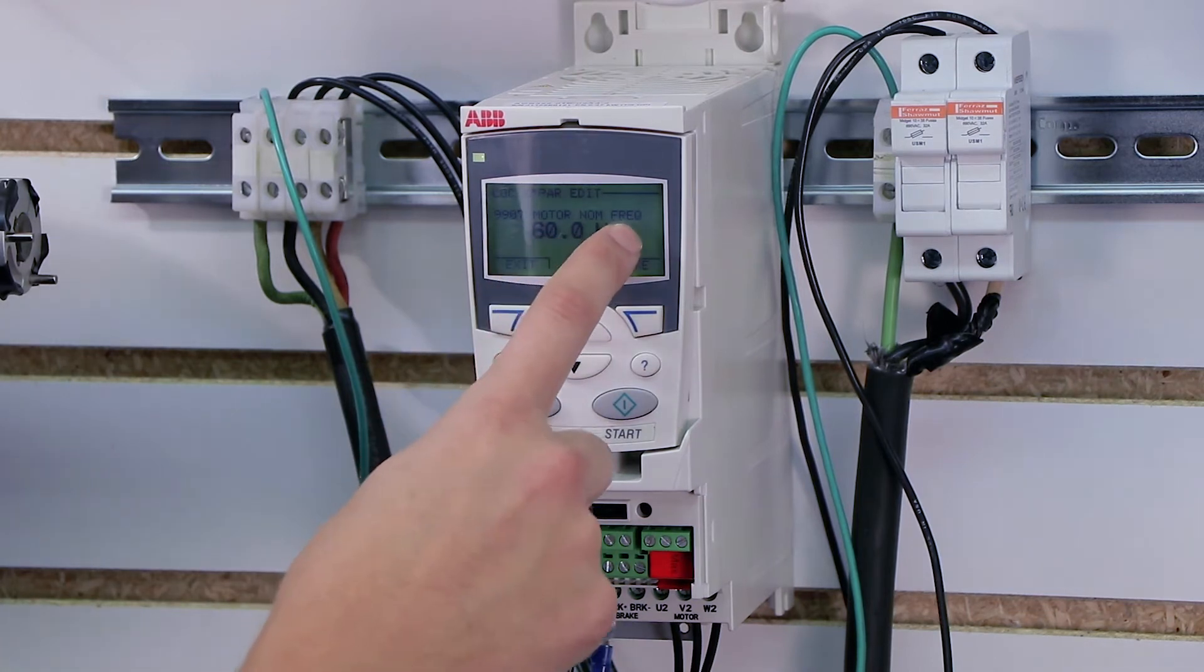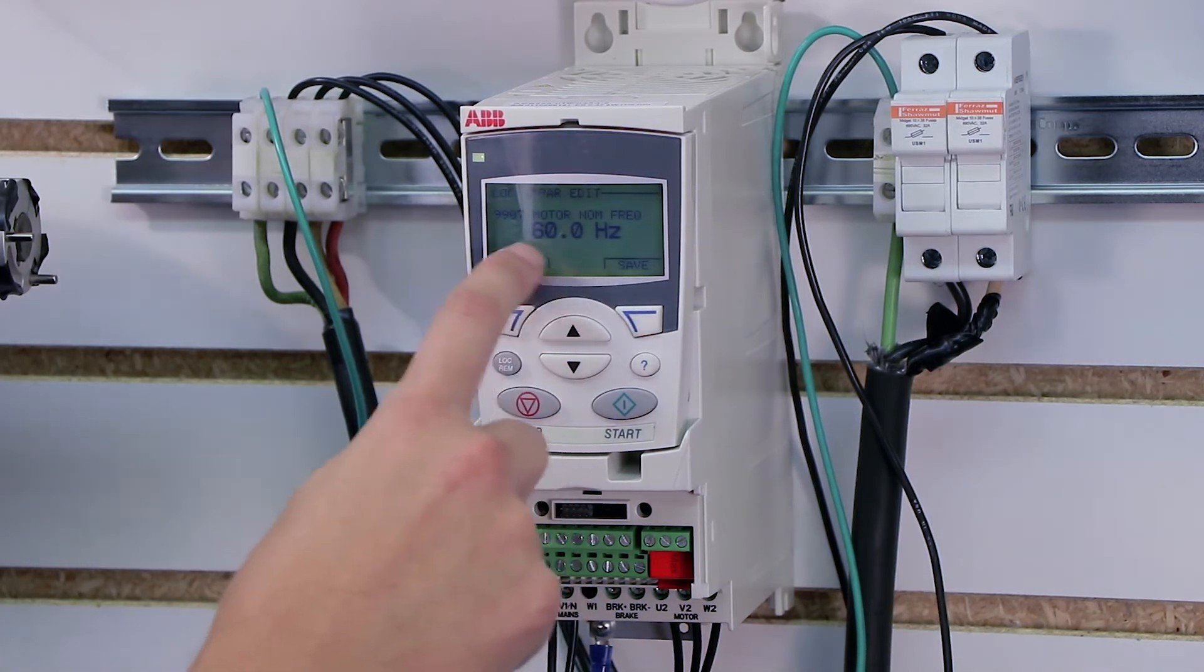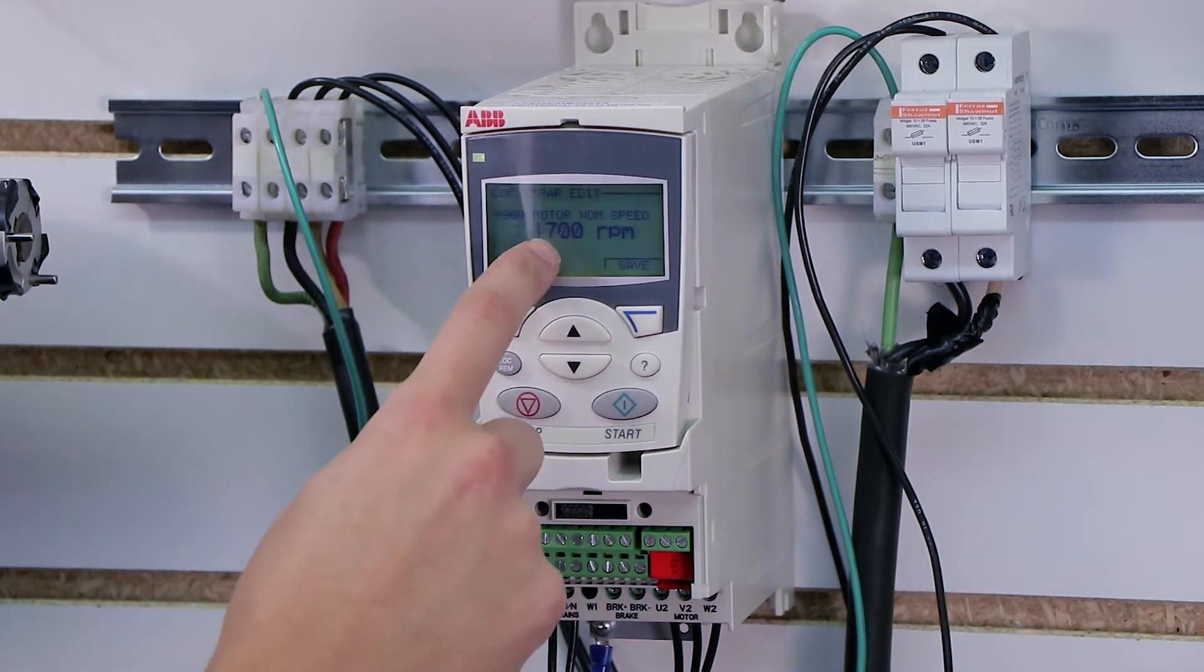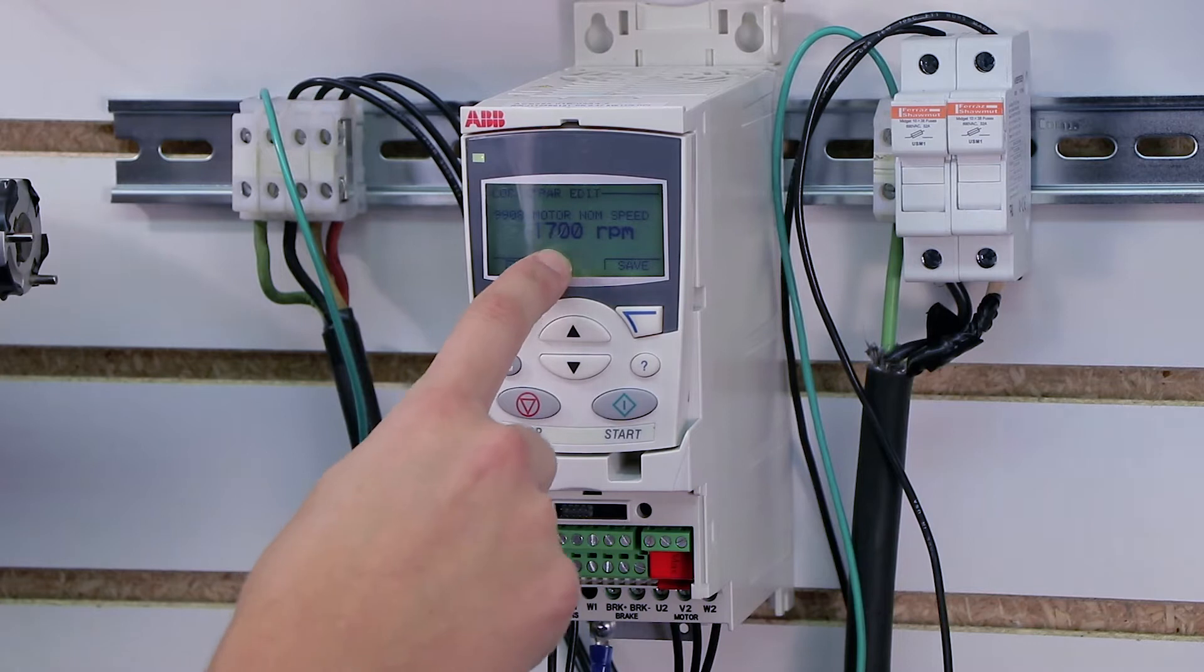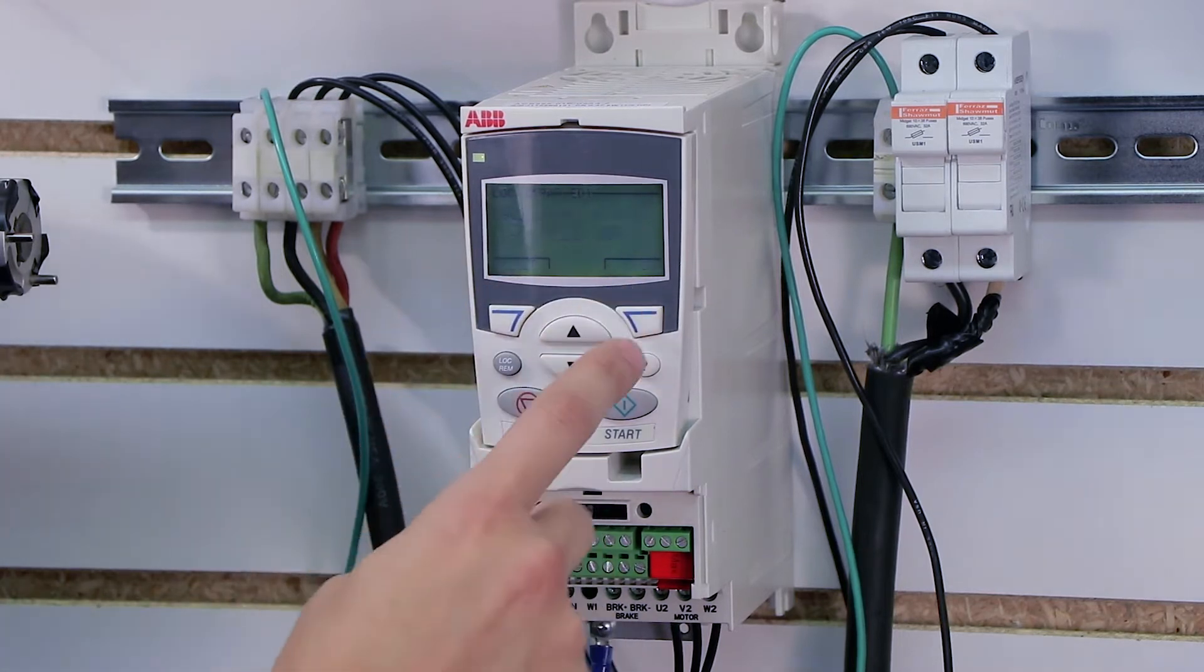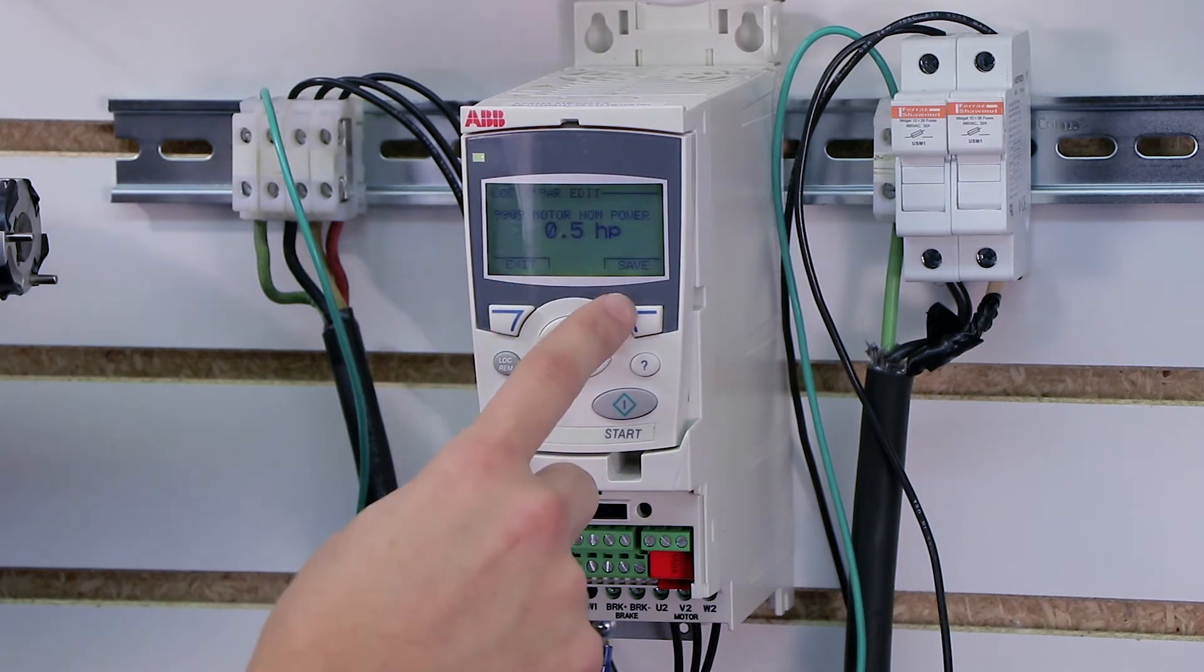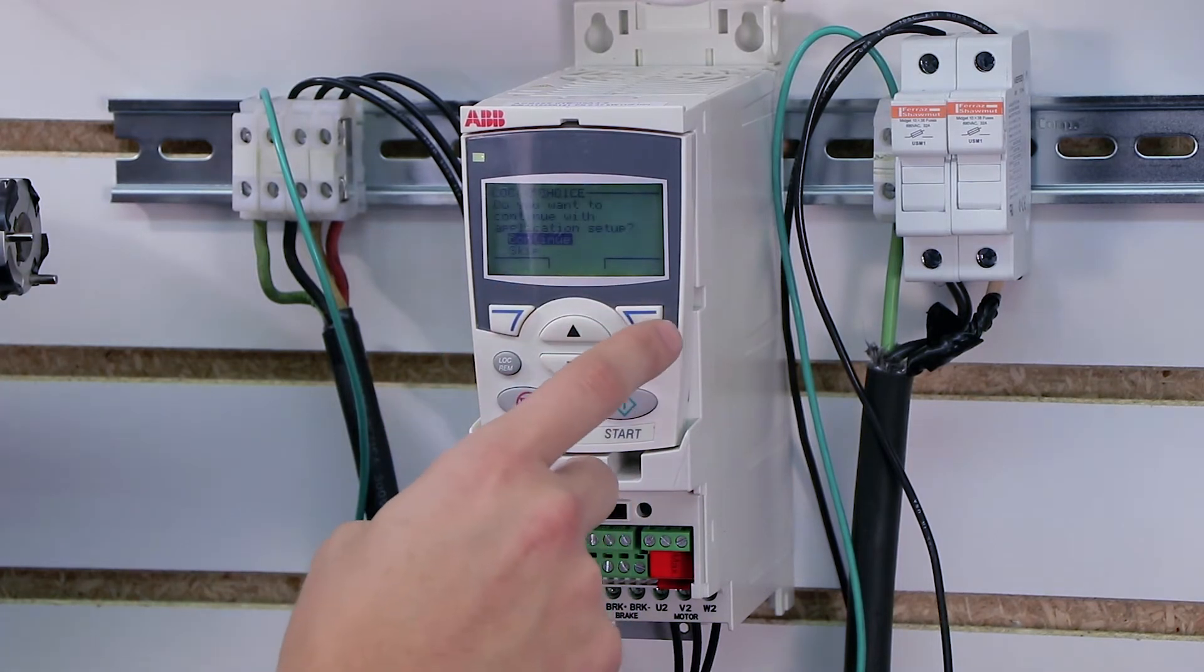My motor nominal frequency is also on the nameplate of the motor, and mine is 60 hertz. My motor nominal speed is also on the nameplate of the motor, 1,700 RPM is what mine's set for, and the nominal power in horsepower for me is a half horsepower motor, so I'm going to press enter on that.